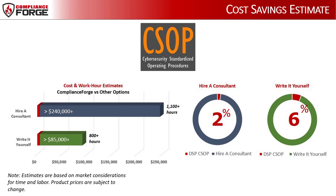If you hire a consultant to generate equivalent documentation, it would take an estimated 800 consultant work hours, equating to approximately $240,000, and take between 6 and 12 months of development time. In the end, the DSB version of the CSOP is approximately 2% of the cost of a consultant and 6% of the cost of internal staff to generate equivalent documentation.